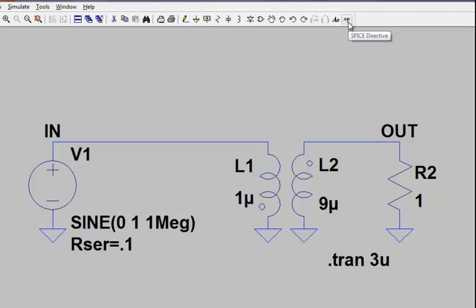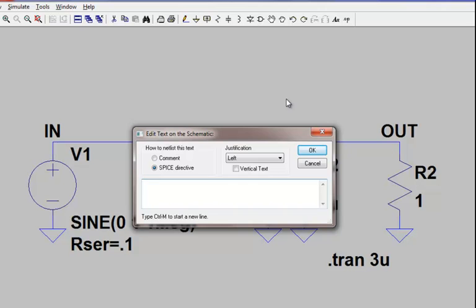Let's click the .op command on the menu. As I mentioned before, the first label on this new line will be K, and then we need to define the inductors that we're using to simulate the transformer, so L1 and in our case L2.